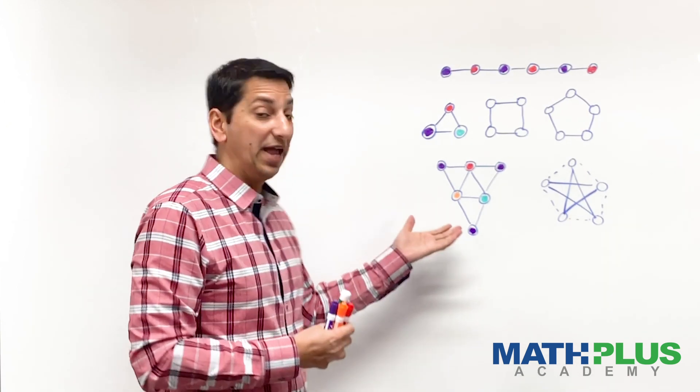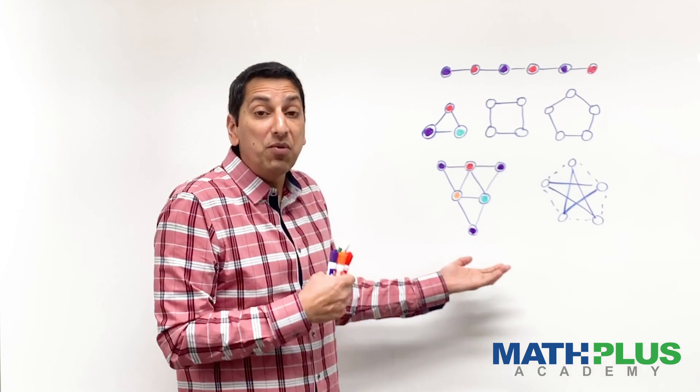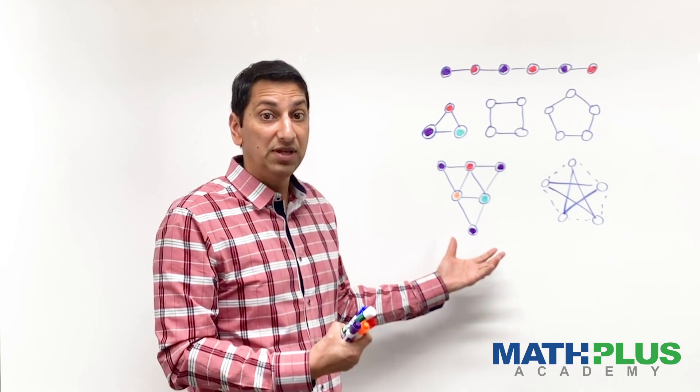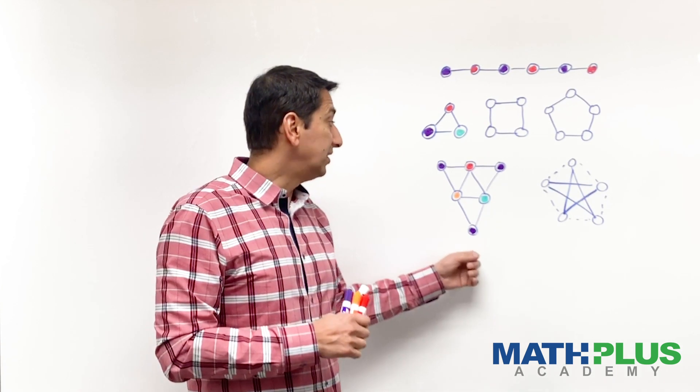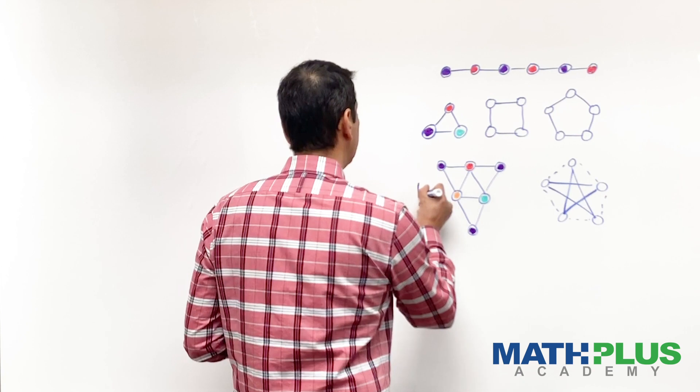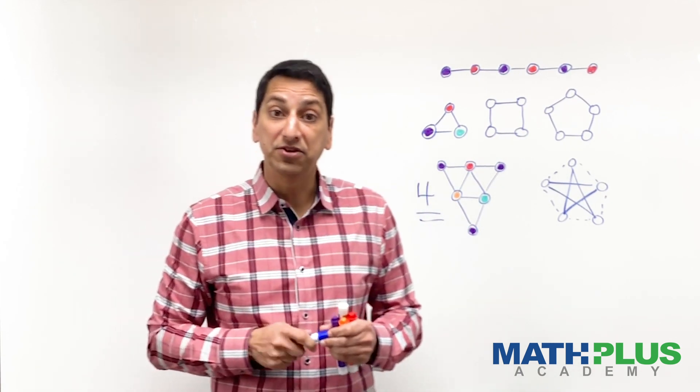And so right now it looks like I've used four colors. Well, I certainly have used four colors. But the question you have to ask yourself is, is there another way I could have done this and done it with fewer colors? So try that. See if you can do better than four. Redo this on your own paper and see if you can beat my score of four.